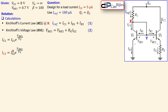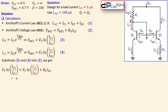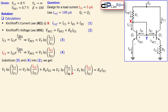Similarly, IC2 = IS2 · exp(VBE2 / VT). We can now express VBE1 as VT · ln(IC1 / IS1) — equation 3 — and VBE2 as VT · ln(IC2 / IS2) — equation 4. Substituting equations 3 and 4 into equation 2, and moving the VBE2 term to the left side, we get the expression: VBE1 − VBE2 = VT · ln(IC1 / IS1) − VT · ln(IC2 / IS2).